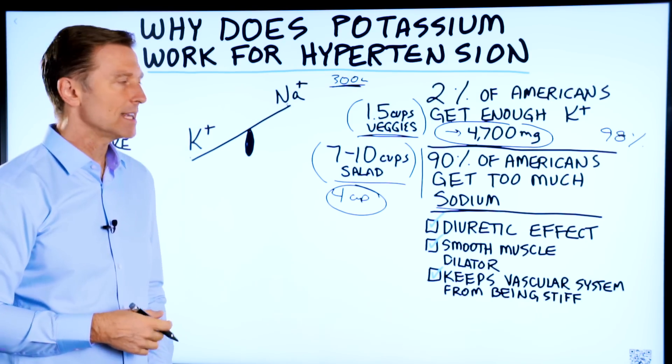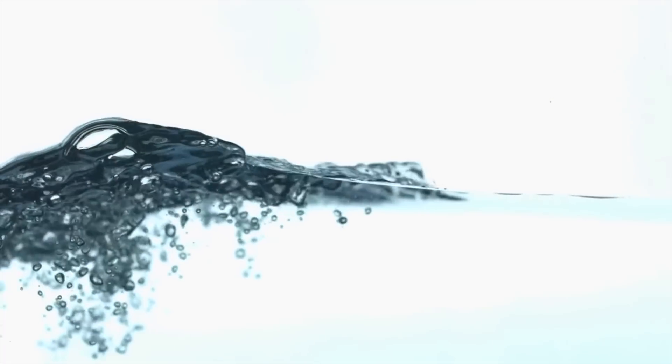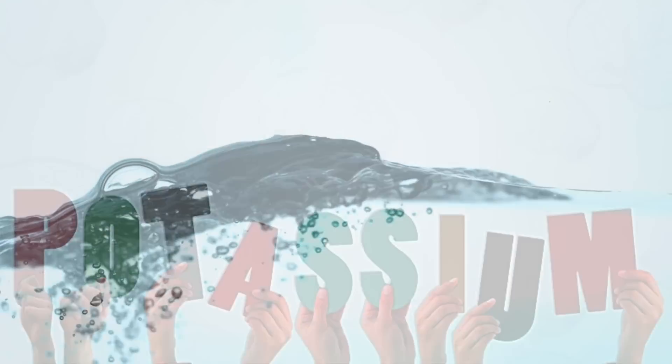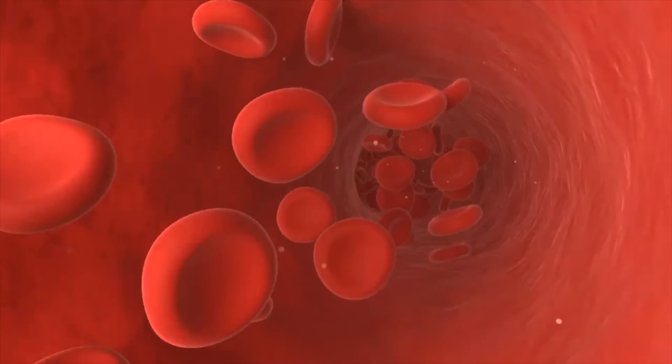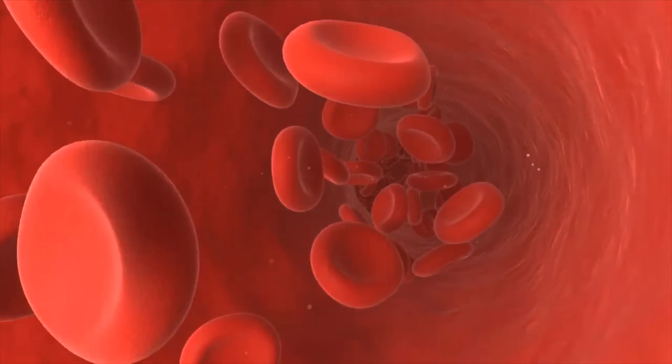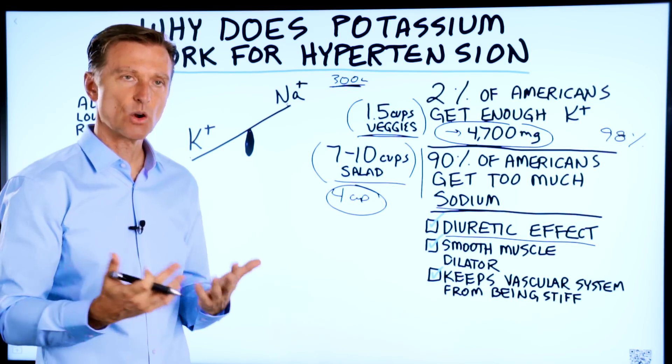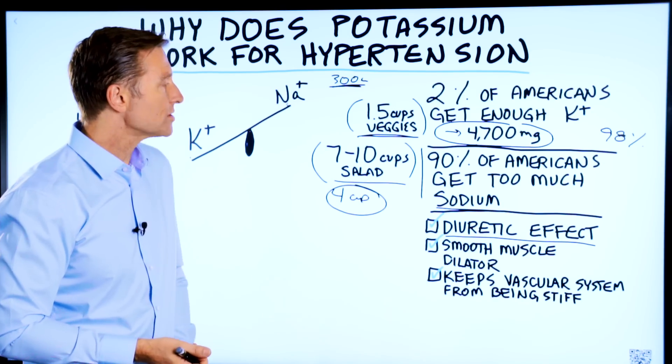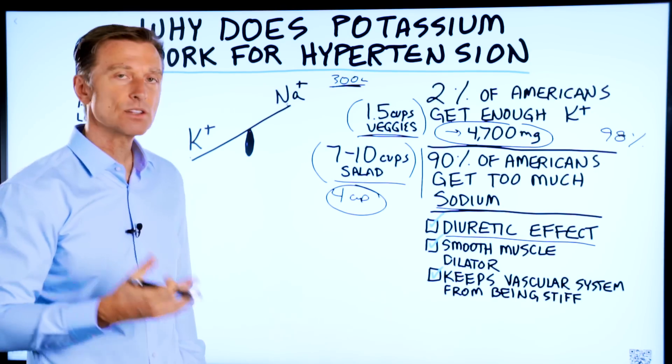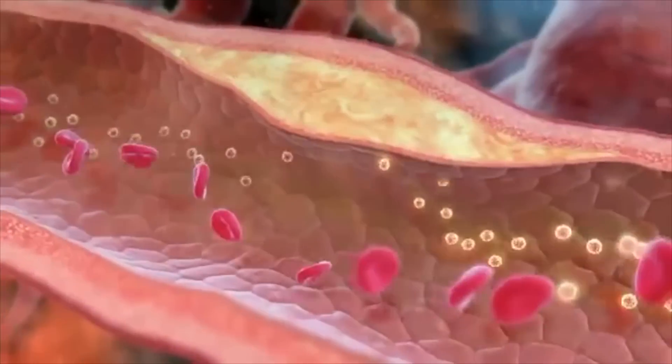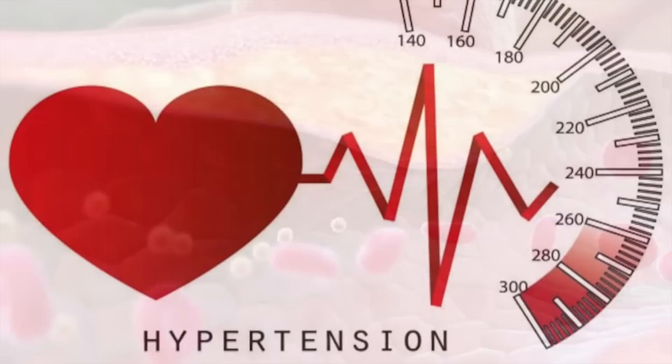Potassium in general has a diuretic effect. It's going to get rid of fluid. Potassium causes the smooth muscle in your arteries to dilate. It's a vasodilator, thus lowering the blood pressure. Also, potassium keeps the vascular system from being stiff because if your arteries are stiff, that alone can cause hypertension.